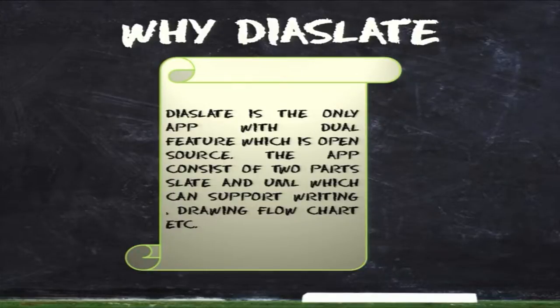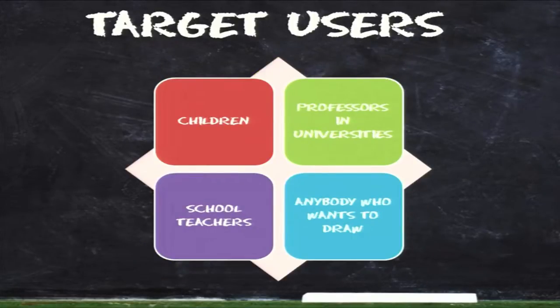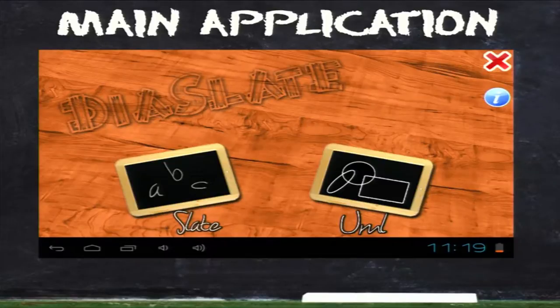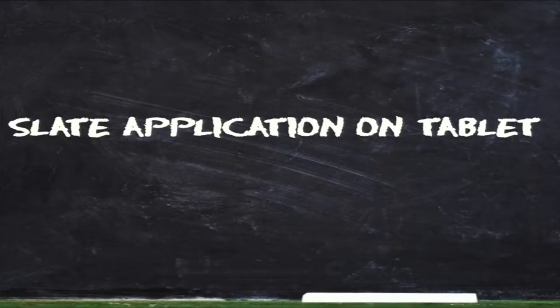When we say the word slate, the first thing that comes to mind is children, so people think this application is only for children — but that is not true. Our target users include children, professors in universities, teachers in schools, and anybody who likes drawing. Dyer Slate is a dual-feature app, so whatever the user wishes to use, they can select slate for drawing or UML for making UML diagrams. Next, Vikram will give a demonstration of the slate part on the Akash tablet.